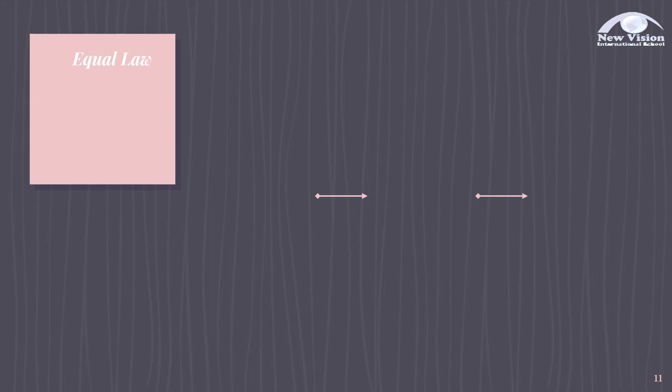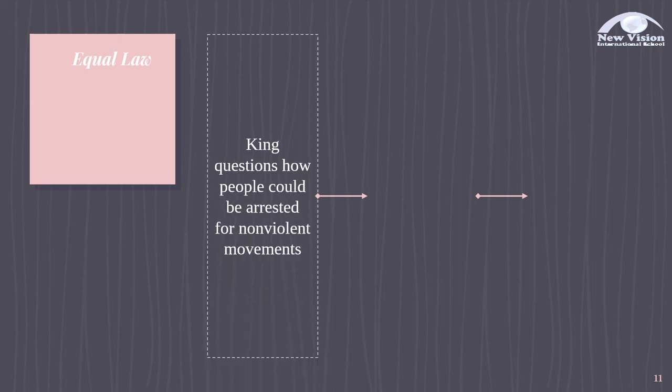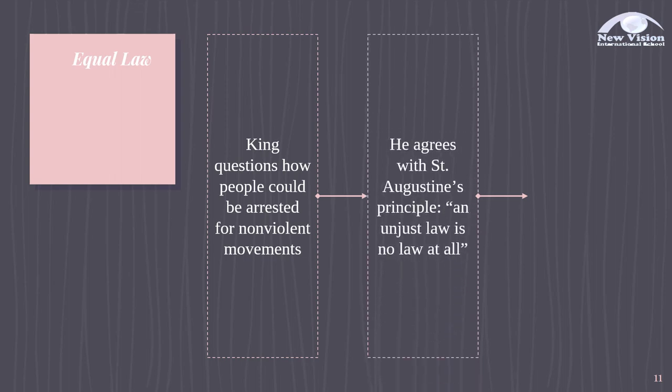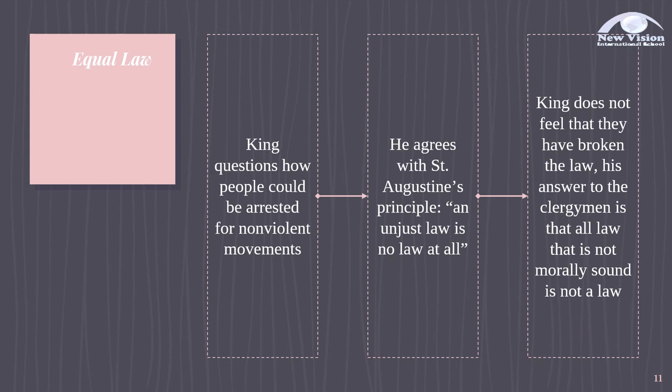The first thing he pointed out is Equal Law. King questions how people could be arrested for non-violent movement. He agrees with St. Augustine's principle that an unjust law is no law at all. And King does not feel that they have broken the law. His answer to the clergyman is that all law that is not morally sound is not a law.